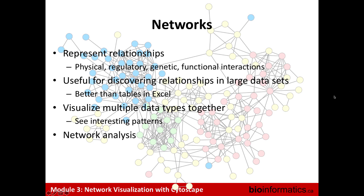Networks are useful for discovering relationships in large data sets. If you just had a few relationships, you could draw them out — you could write A connects to B and B connects to C. But if you have thousands of these things and you put them in a spreadsheet and look at them in tables, you can't really understand the global structure. Networks allow you to visualize the results and see global structure and how things are related to each other. Networks also help visualize multiple different data types together — for instance, protein interaction networks with gene expression data overlaid.